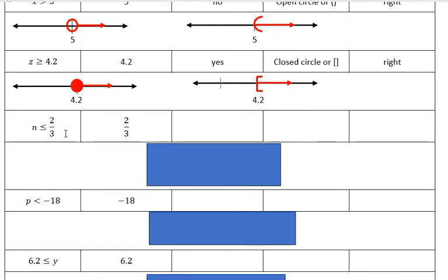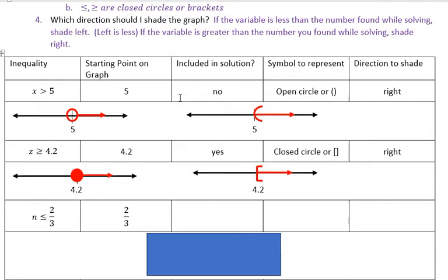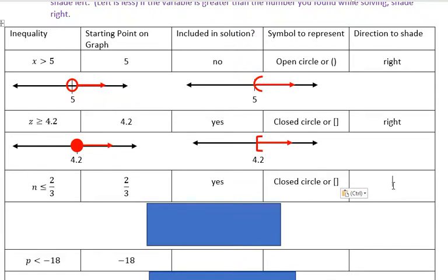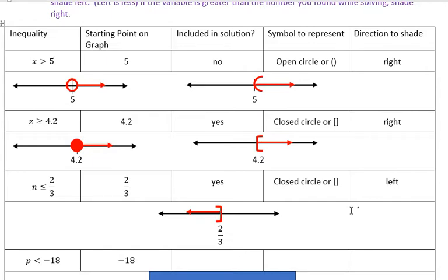The third example has two-thirds as our starting point. Is two-thirds included in this solution? We see an equal to part, so the answer is yes. What symbol do we use? We use a closed circle or bracket. Which direction do we shade? Since n is less than — the symbol is pointing at the variable — we're going to shade to the left. So we should see a starting point of two-thirds with a bracket opening to the left, and that's what we have for that graph.